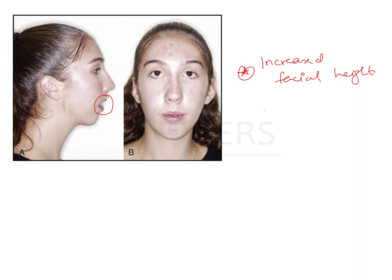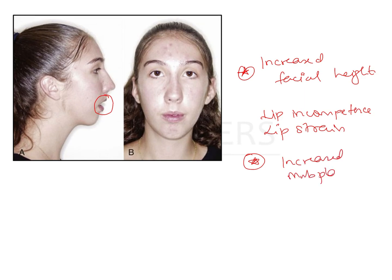There will be lip incompetence — at rest, the lips are not touching. If the patient tries to close forcefully, there will be lip strain. Most importantly, there is going to be an increased mandibular plane angle because the mandible is rotating downward and backward. Because of this, there is going to be a Class II type of malocclusion due to mandibular deficiency — a retrognathic or deficient mandible.